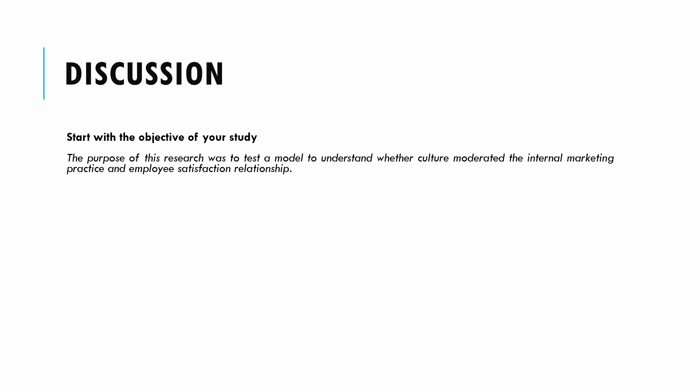When you are writing a discussion section, you should start with the objective of your study — a clear statement on what was the objective of your study. Here is an example: 'The purpose of this research was to test a model to understand whether culture moderated the internal marketing practice and employee satisfaction relationship.' You start your discussion section by highlighting the purpose of your study, followed by how your results compare to the results of previous research.